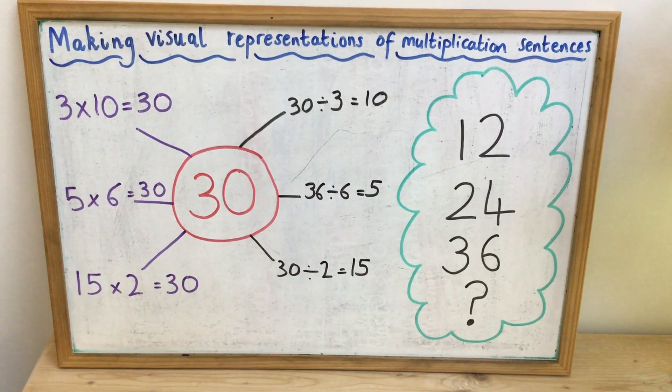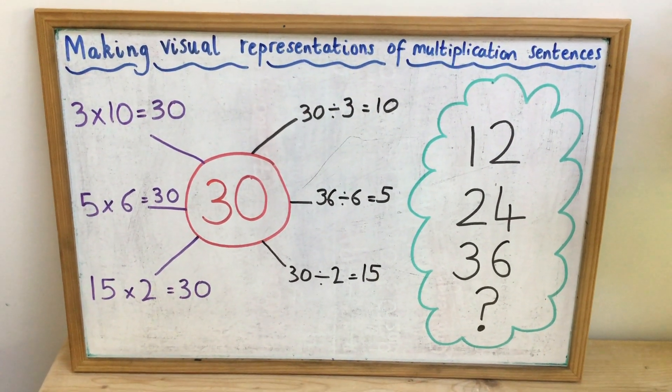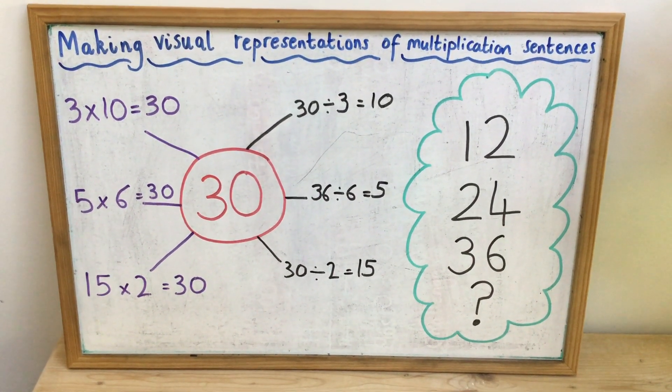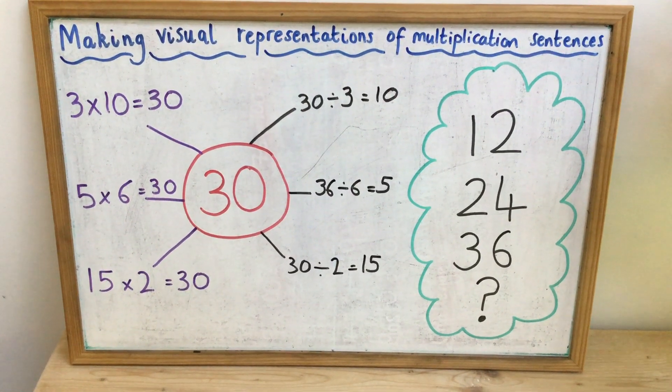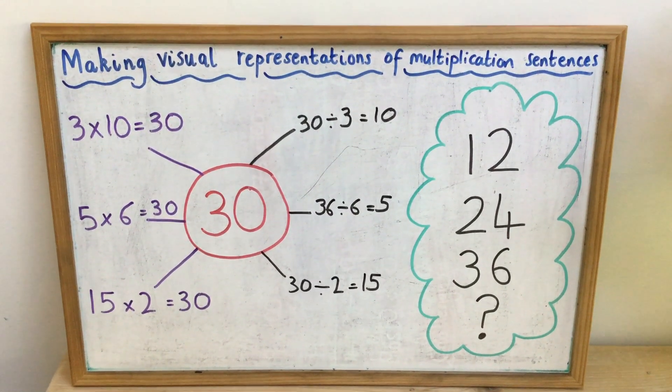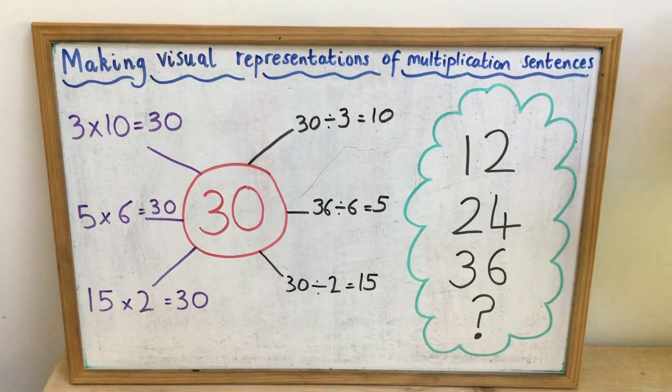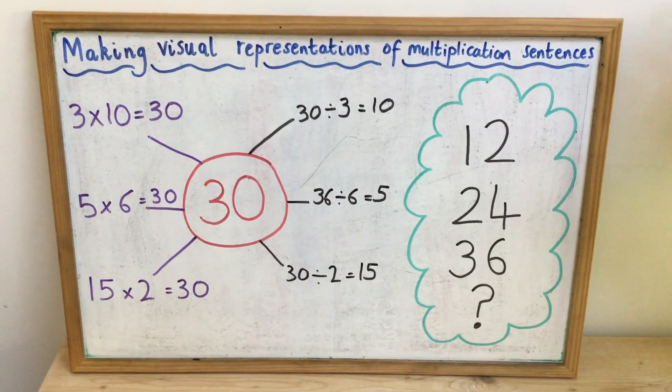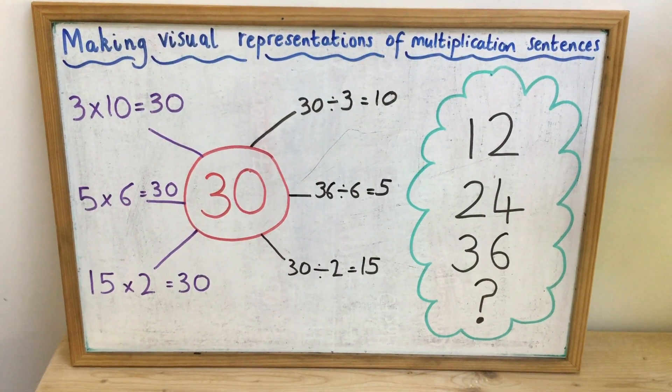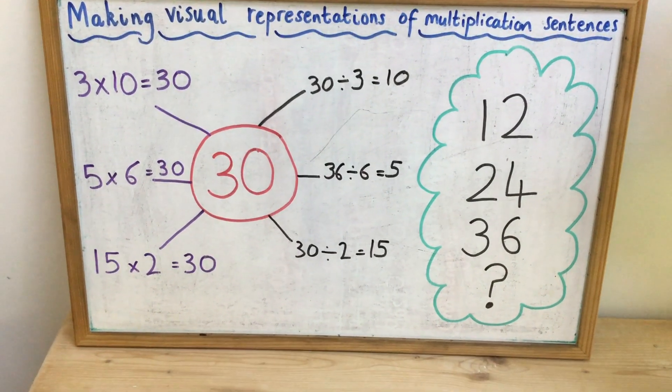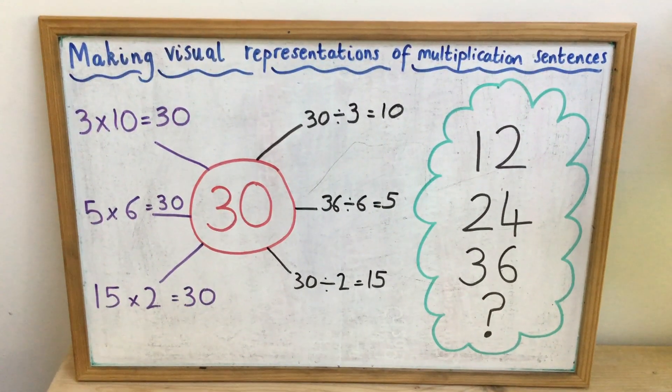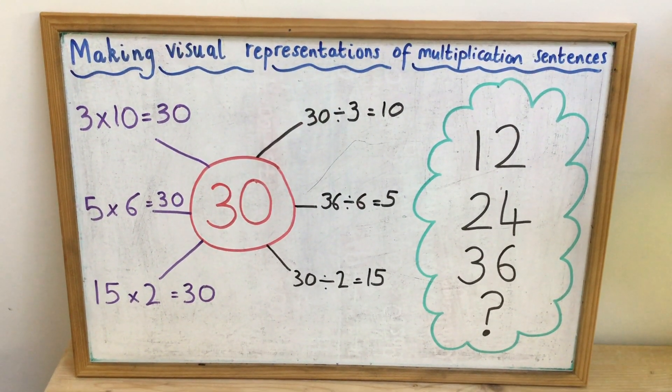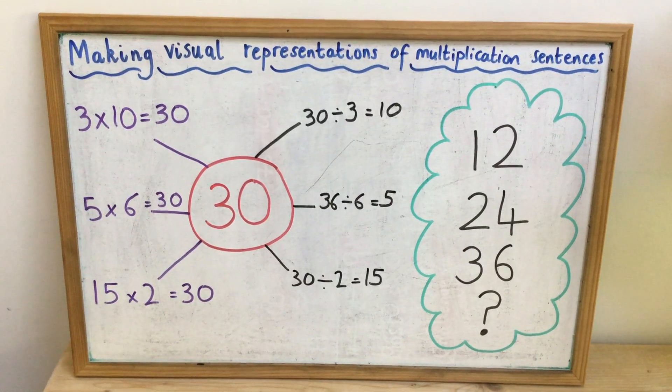And if you're feeling super smart, you could also show me the inverse division statement as well. Do the same with 24 and do the same with 36. Now you'll also see that there is a question mark there. And that is because I then want you to choose any number you would like. So you can pick 56, 99, whatever you fancy. To then make your own visual representations of multiplication sentences that equal that number.